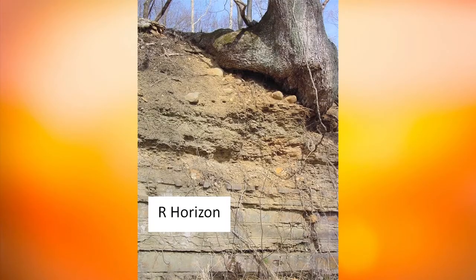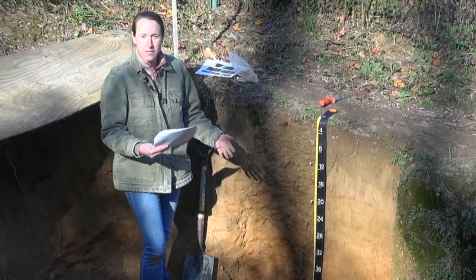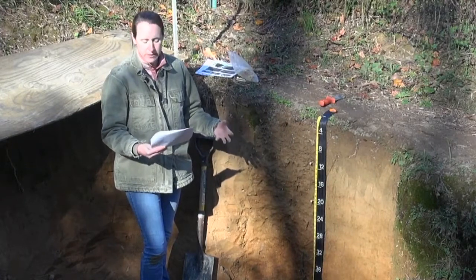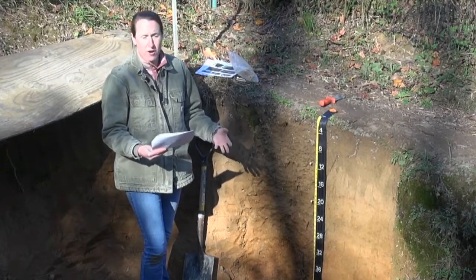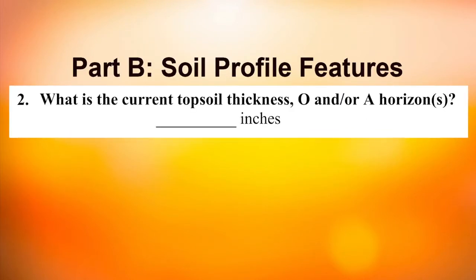An R horizon is for bedrock. Since we're on the coastal plain we don't see bedrock here, but in other parts of Maryland you might see hard rock that the soil is formed in — that's your R horizon. When answering question one, you're going to check off that you have an A, an E, and a B horizon.